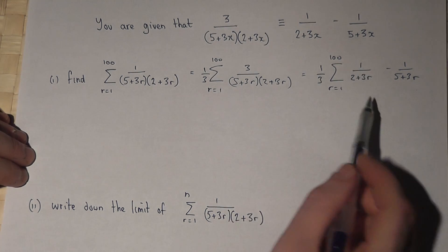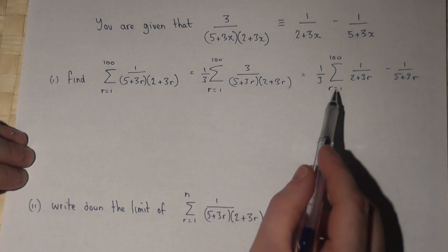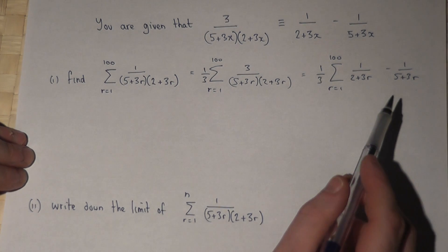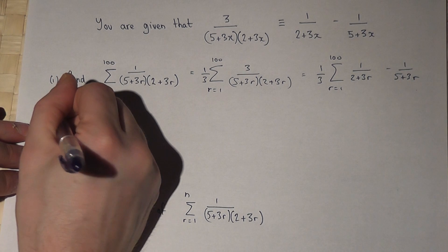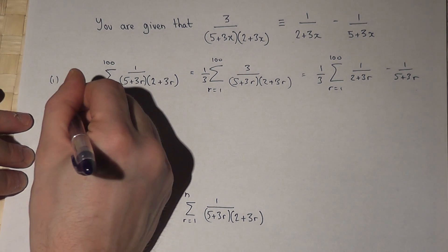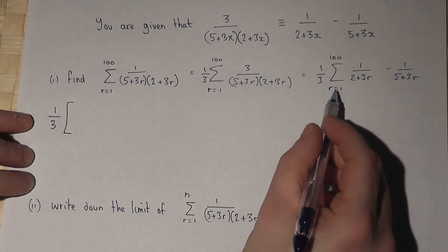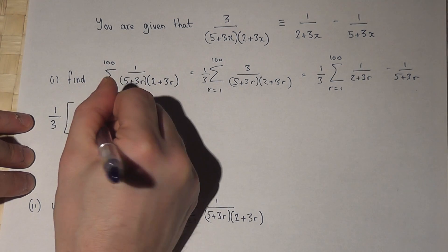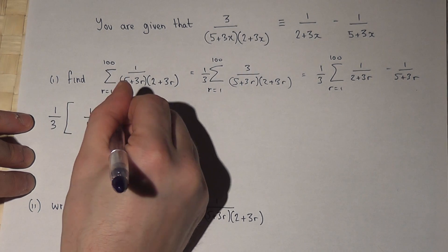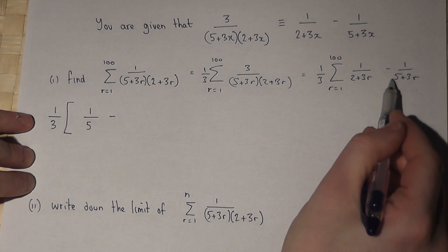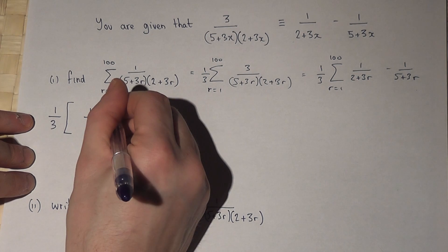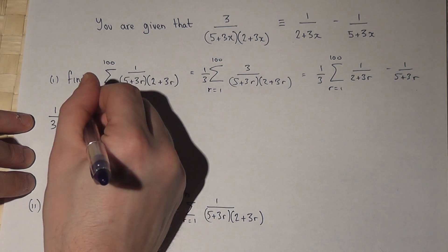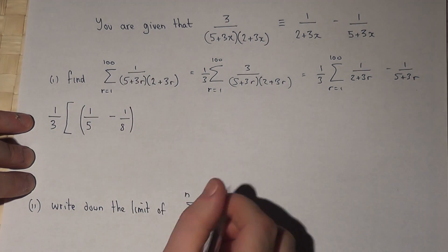Now this might look quite complicated, but if we start to put some numbers in, something clever happens. We've got this big third as a factor. When r equals 1, we have 1 over 2 plus 3, which is 1 over 5, take away 1 over 5 plus 3, which is 1 over 8.